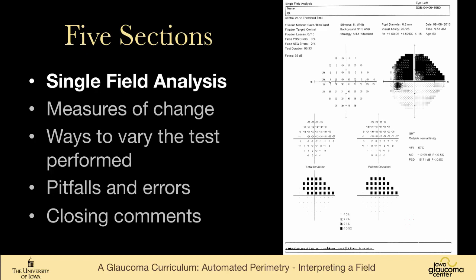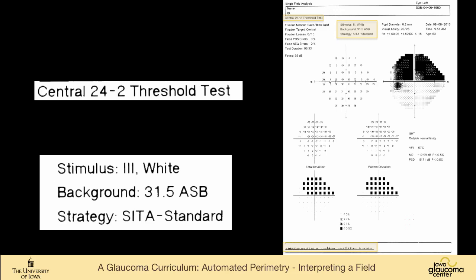So first, let's look at this visual field. This is a patient of mine who has a dense superior arcuate scotoma from glaucoma. As we look at the field, we see that it's a central 24-2 threshold test. That's the default in our department. You can use a 30-2. There are other sizes, and we'll talk about that.